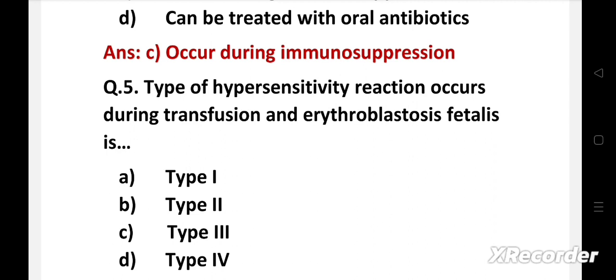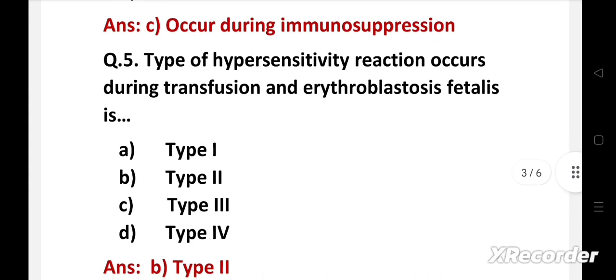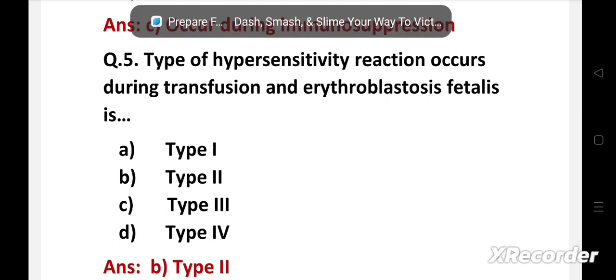Next question. Type of hypersensitivity reaction occurs during transfusion and erythroblastosis fetalis is: Option A Type 1, B Type 2, C Type 3, D Type 4. The answer is Type 2. Type 2 hypersensitivity reactions are antibody-mediated reactions that cause host tissue damage when antibodies directly bind to the antigens on the cell surfaces and result in cellular destruction.